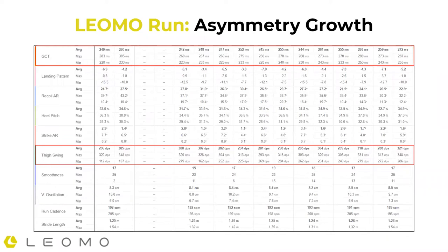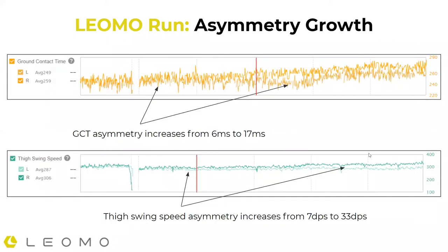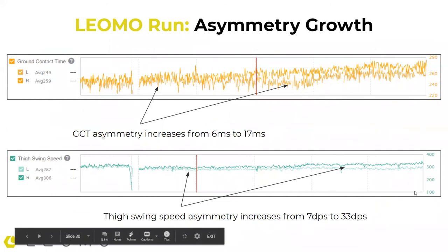Looking at asymmetries — where do they change, and which increase in magnitude? For ground contact time, we start out not too bad: a difference of about six milliseconds. But as fatigue sets in, that magnitude grows quite a bit to 13 milliseconds — more than double. For thigh swing speed, it starts off pretty even at about seven degrees per second difference, and as the activity progresses, we see that growing substantially — up to 33 degrees per second, which is about a five-times change.